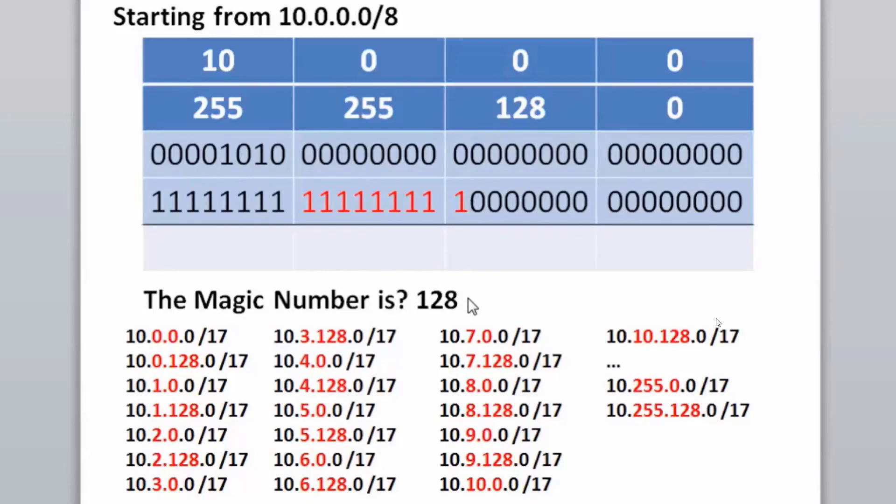But they'll also need to go up for every number possible in the second octet. If we look below here, we can see our subnets. The first subnet will be the 10.0.0.0 slash 17 subnet, then the 0.128 subnet, then the 1.0 subnet, then the 1.128 subnet. And as you can see, we're iterating through every possible number in the second octet and then going up by 128 in the third octet.